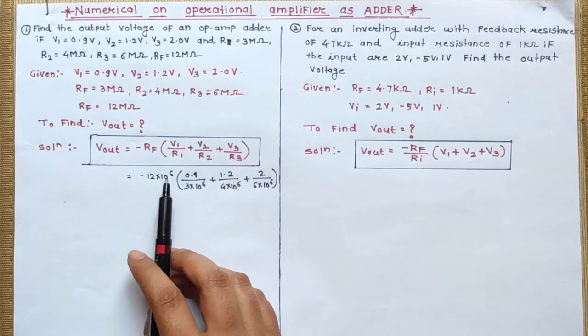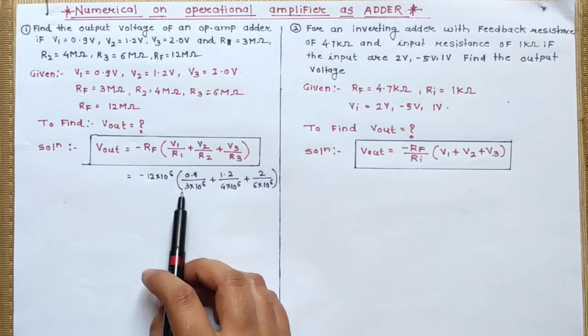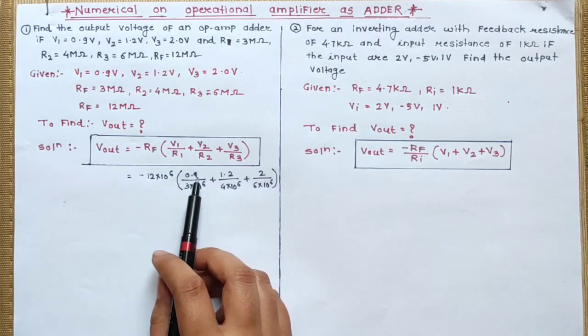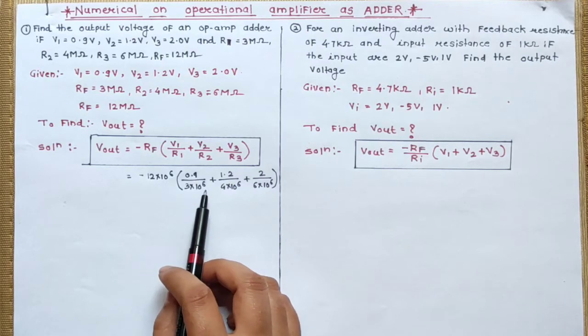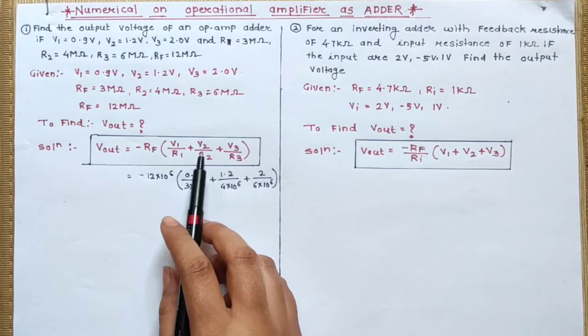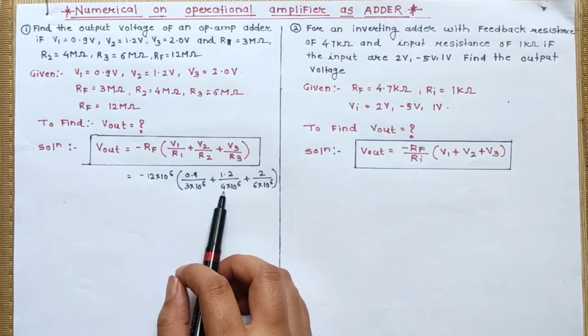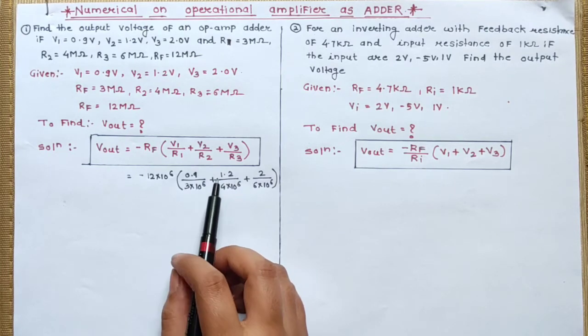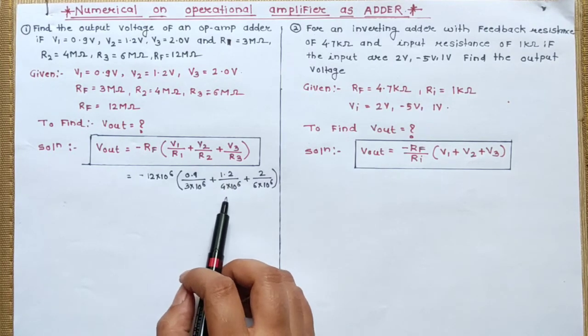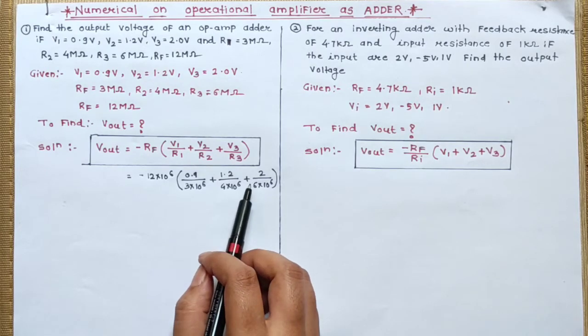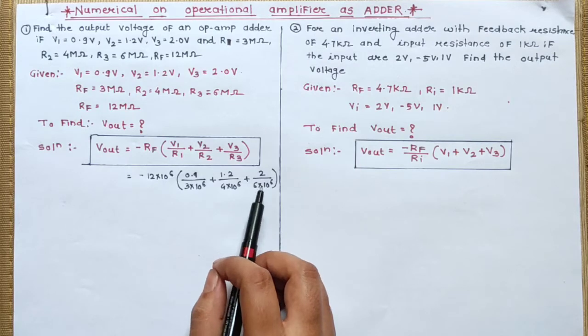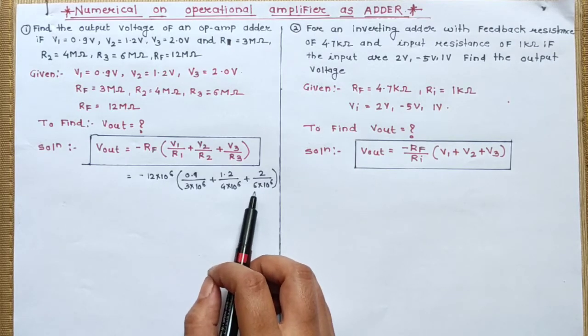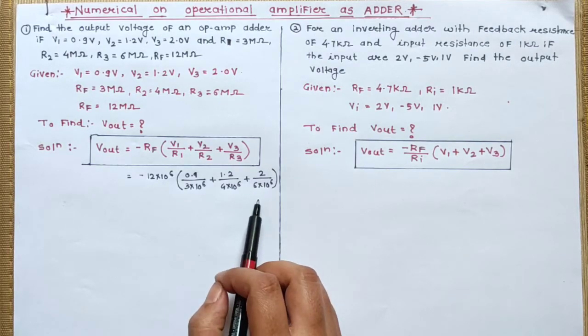In bracket, V1 is 0.9 upon R1 is 3 mega ohms, 3 into 10 raise to the power 6, plus the value of V2 is 1.2 and the value of R2 is 4 mega ohms, so 1.2 upon 4 into 10 raise to the power 6, plus V3 is 2 volt, so 2 upon the value of R3 is 6 mega ohms, so 6 into 10 raise to the power 6.